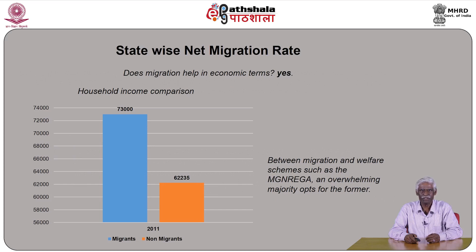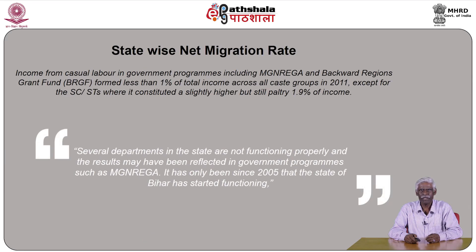Between migration and welfare schemes such as the Mahatma Gandhi National Rural Employment Guarantee scheme, an overwhelming majority opts for migration. Income from casual labor in government programs including MGNREGA formed less than 1 percent of total income across all caste groups in 2011, except for Scheduled Castes and Scheduled Tribes where it constituted a slightly higher but still paltry 1.9 percent of their income. It has only been since 2005 that the state of Bihar has started functioning more effectively.